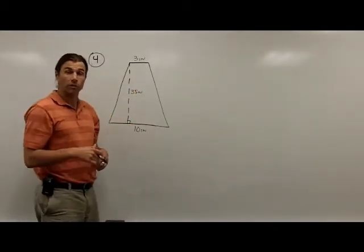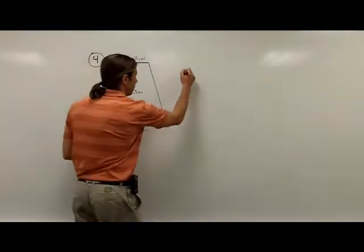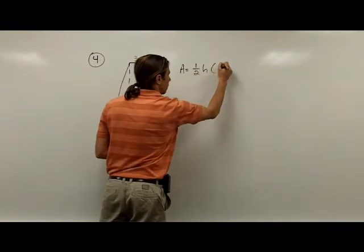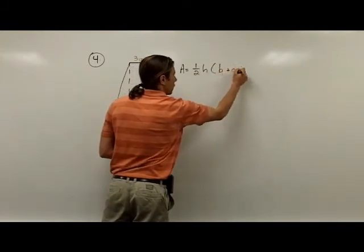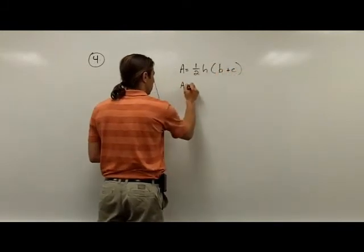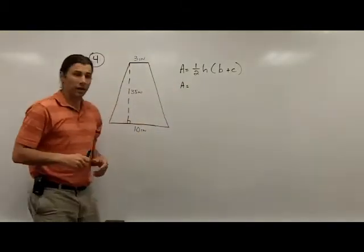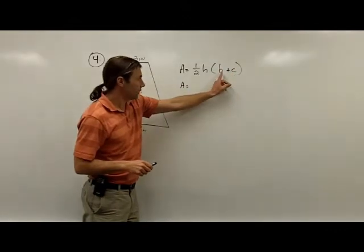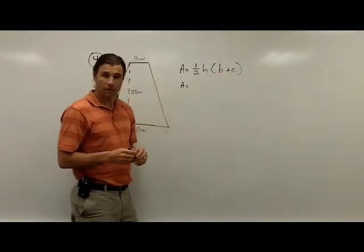Now that I've got the picture drawn, I'm going to go ahead and write the formula to find the area. The way I think things are written in the formula sheet, 1/2 height times base, and then times the quantity of base plus the other base.